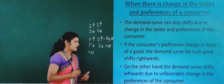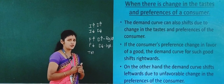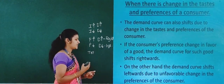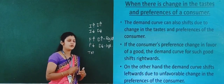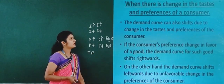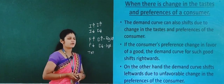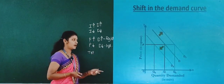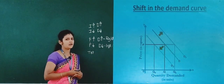On the other hand, when there is an unfavorable change in the preferences of the consumer, demand decreases and the demand curve shifts to the leftward. This is how a change in taste and preferences affects the demand curve.